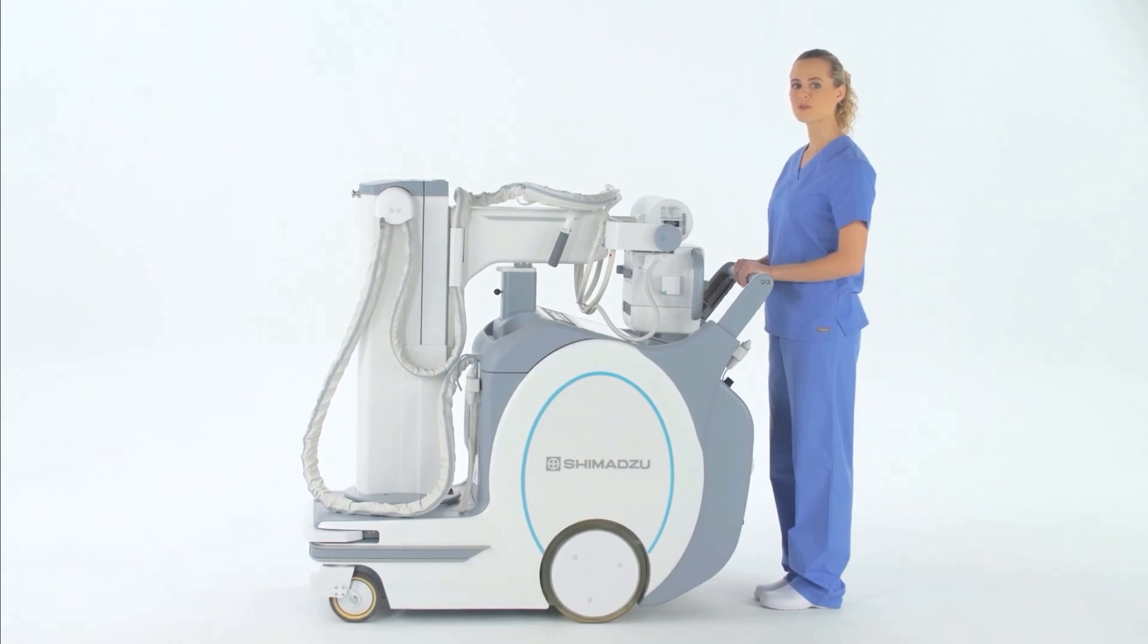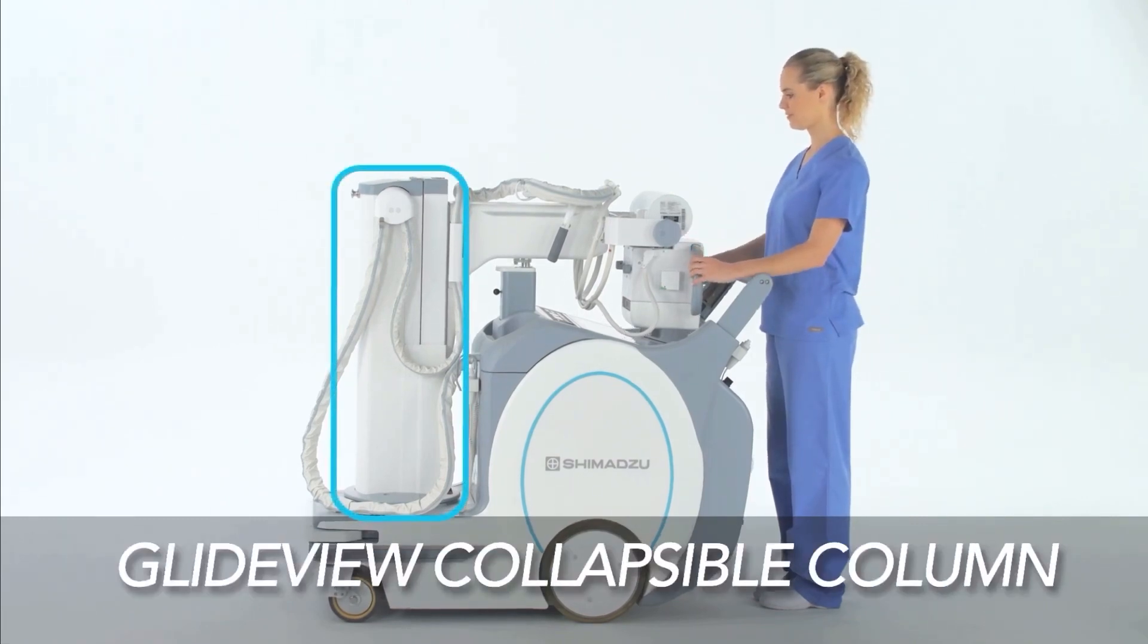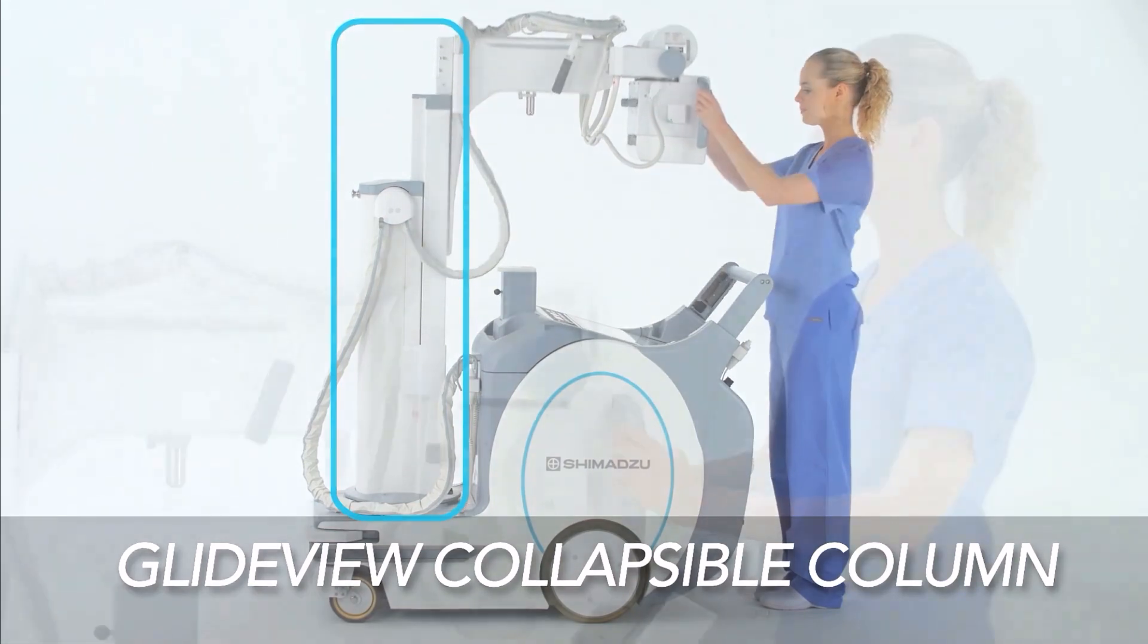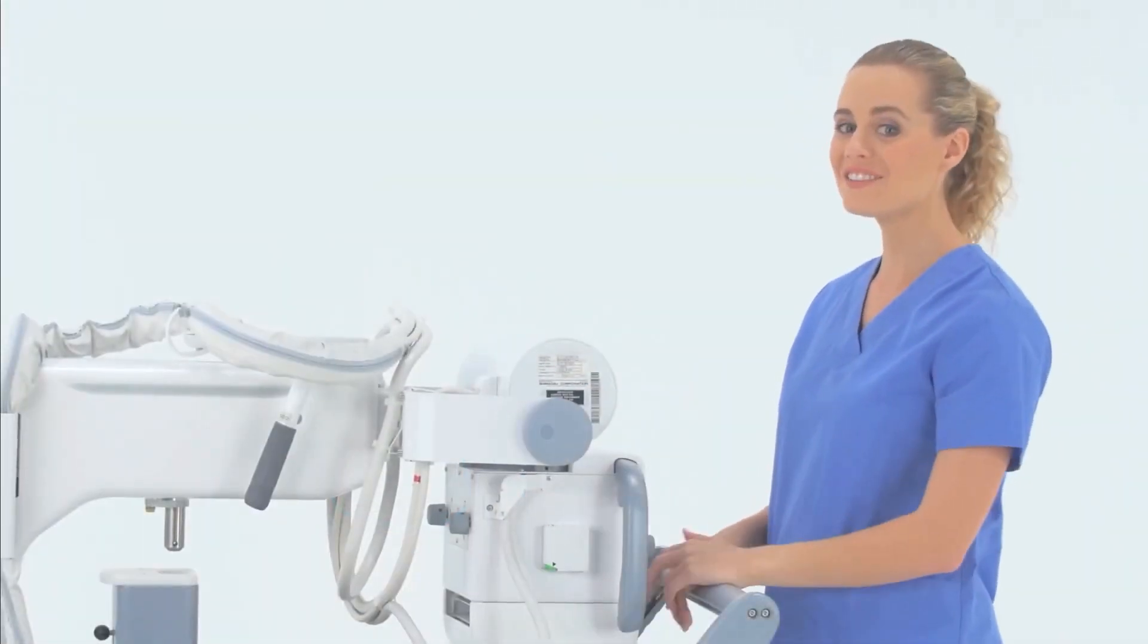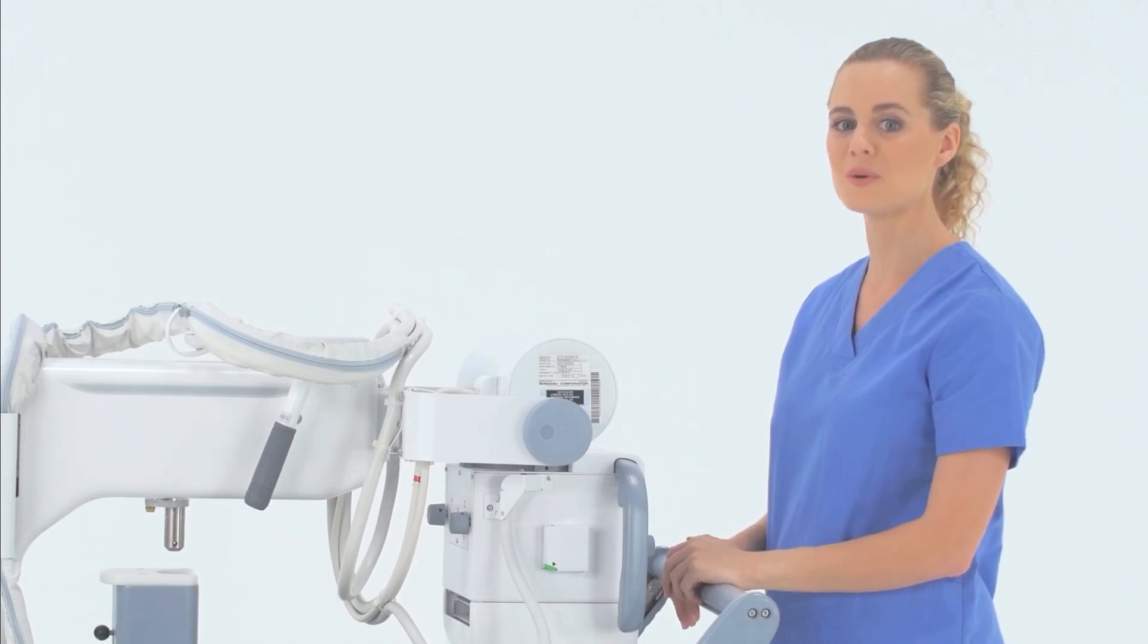One of the first improvements you will notice is the increased field of visibility over the top of the unit. This is due to the new GlideView collapsible column. Now technologists of nearly any height can enjoy a virtually unobstructed field of view when driving the unit.